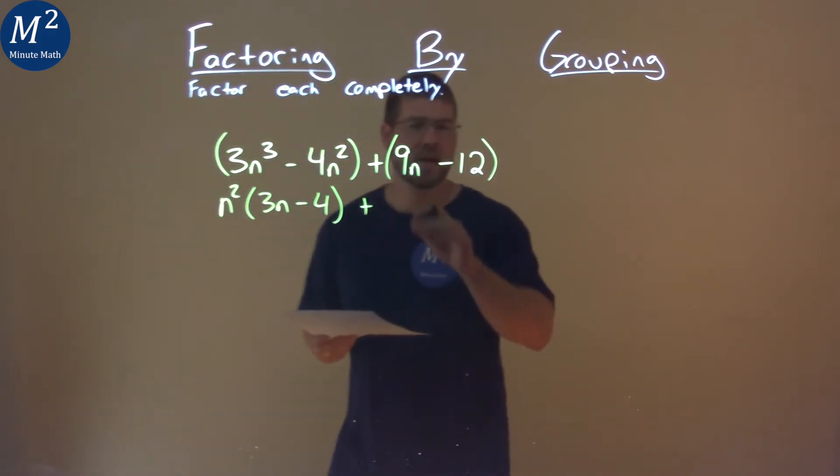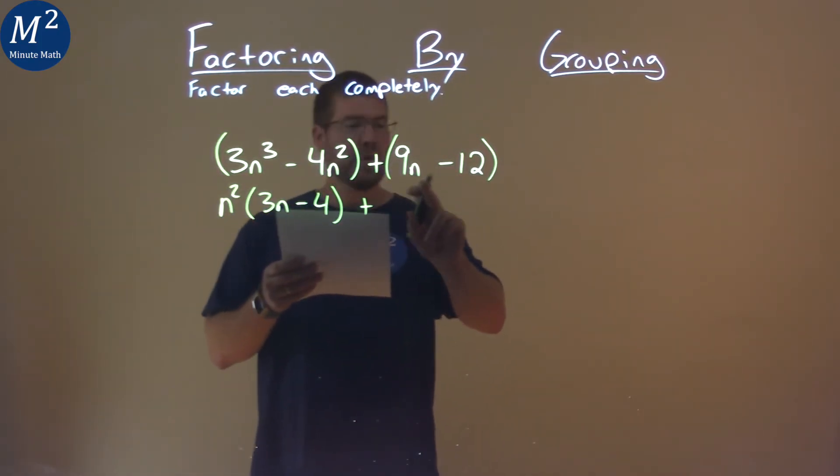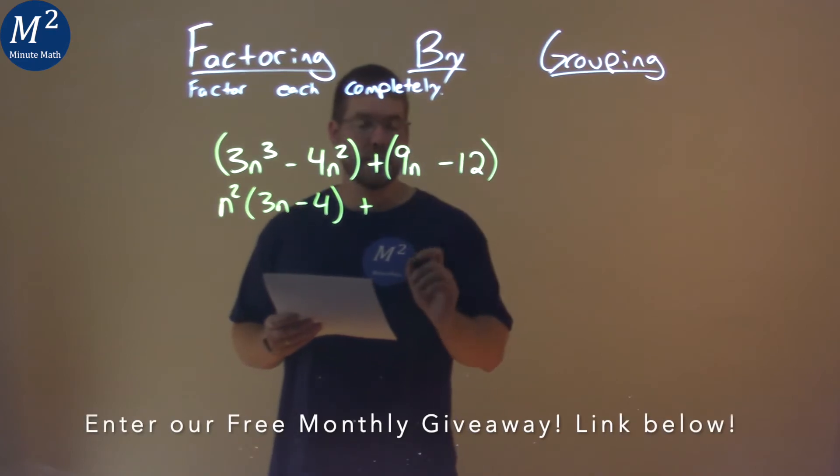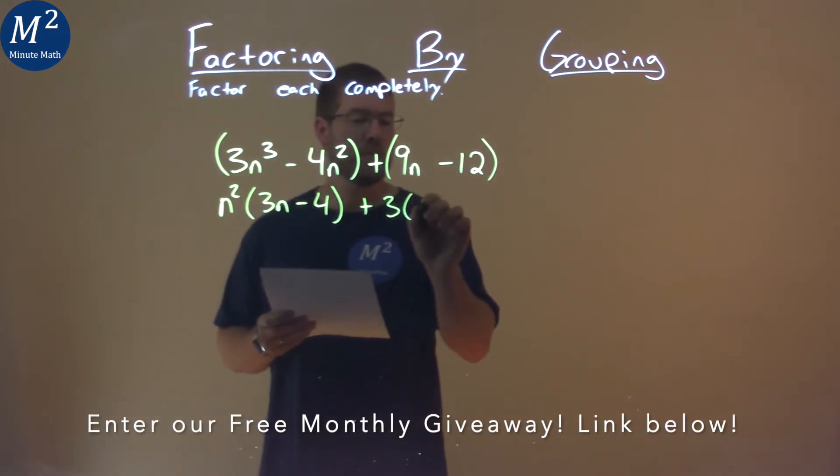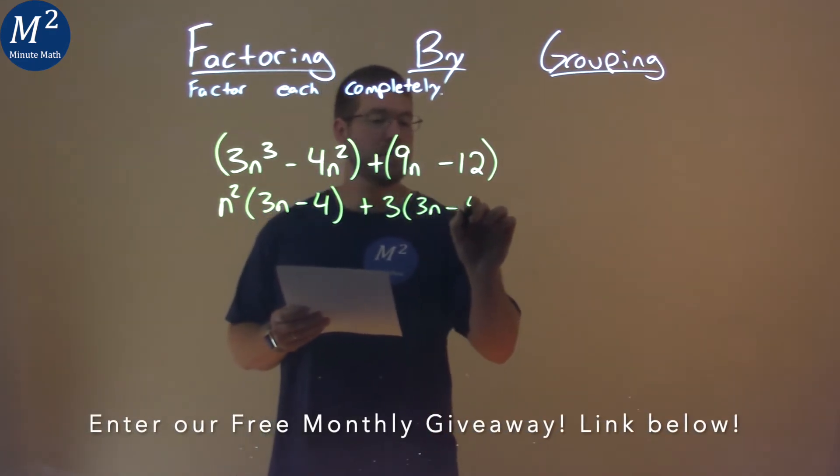All right, second group, what is it, 3, 3 goes into both parts here. So pull out a 3, and I'm left with a 3n minus 4.